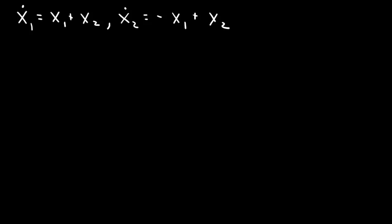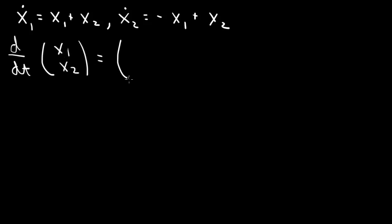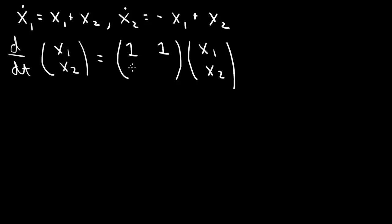Here I want to consider a system of equations: x1-dot equals x1 plus x2, and x2-dot equals minus x1 plus x2. We can write this in matrix form, where the dot is the time derivative, so d/dt of [x1, x2] is our 2×2 matrix times [x1, x2]. The first row is [1, 1] and the second row is [-1, 1]. This is our standard matrix equation: x-vector-dot equals A times x-vector.